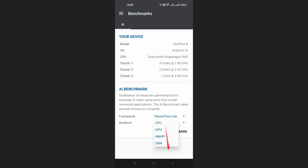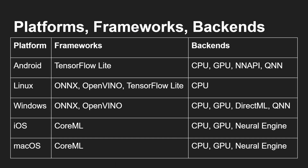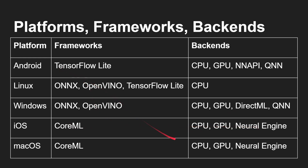Here's a summary of the different options. On Android, there's only TensorFlow Lite with four different backends. On Linux, there are three different AI frameworks but only CPU support. On Windows, there are two frameworks with CPU, GPU, and DirectML options, and Qualcomm's SDK for Copilot Plus PCs. On Apple, you've got CoreML with CPU, GPU, and neural engine. There's no real common backend — CPU is common across all platforms, and the different frameworks give you very different results.